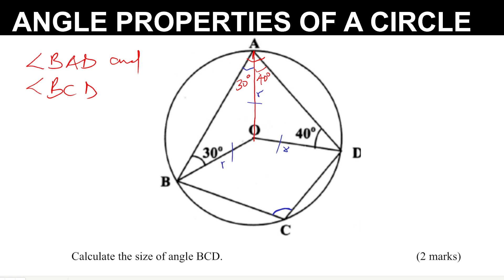Two opposite angles in a cyclic quadrilateral must add up to 180. So if I take this angle, angle BAD plus angle BCD, that one should give 180. That is a property. Therefore, angle BAD is 30 plus 40, that would be 70 degrees, plus angle BCD should give 180.